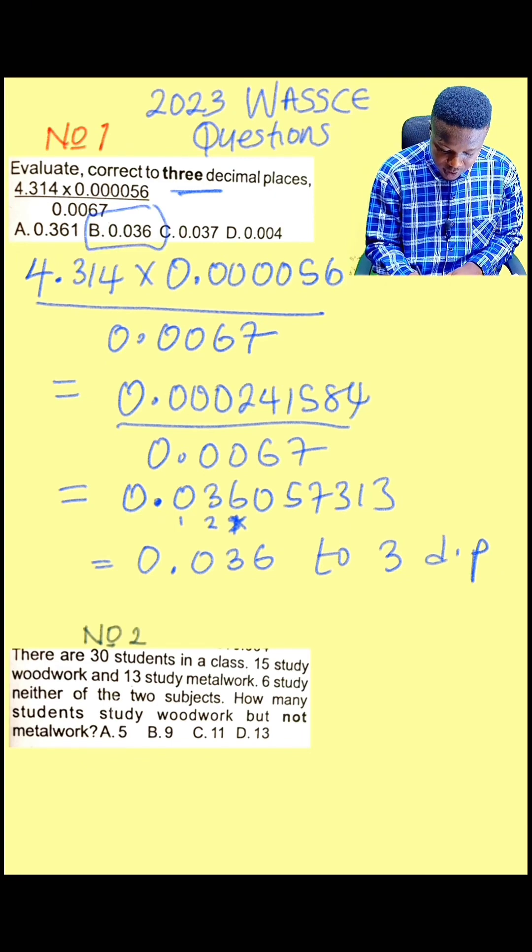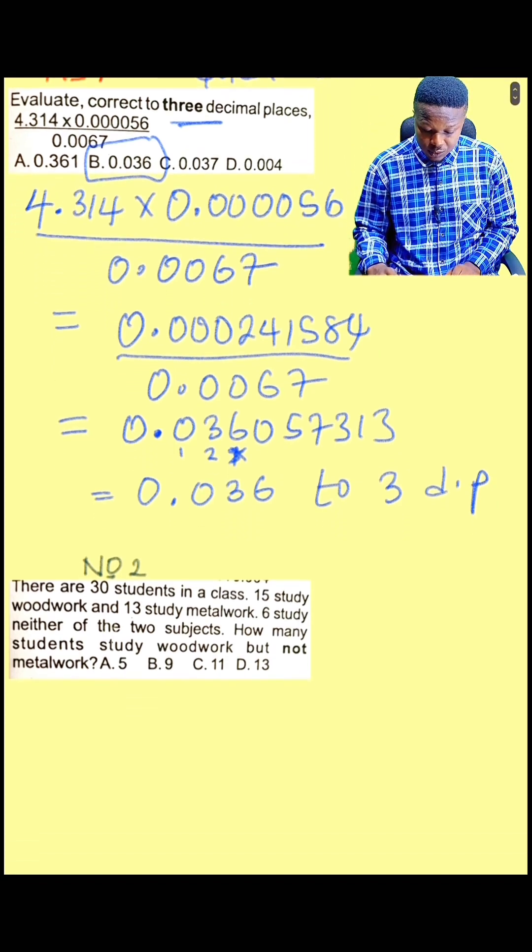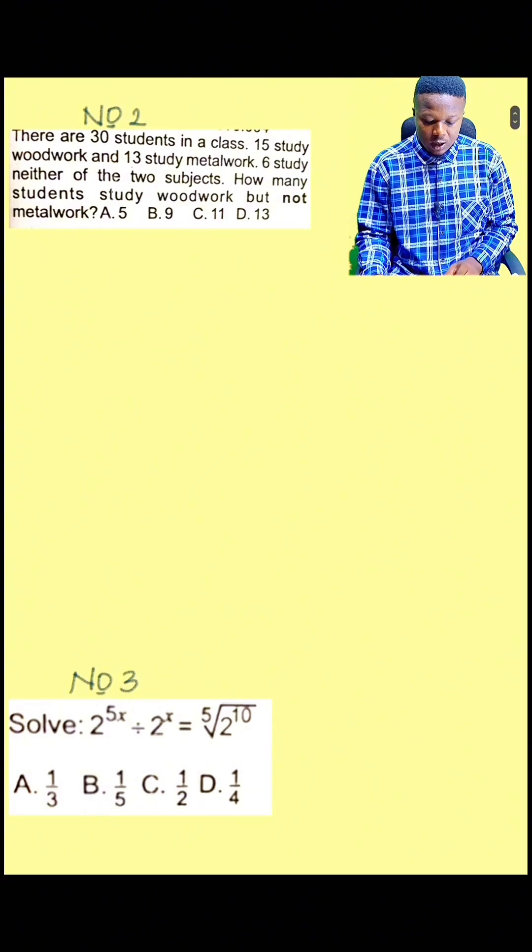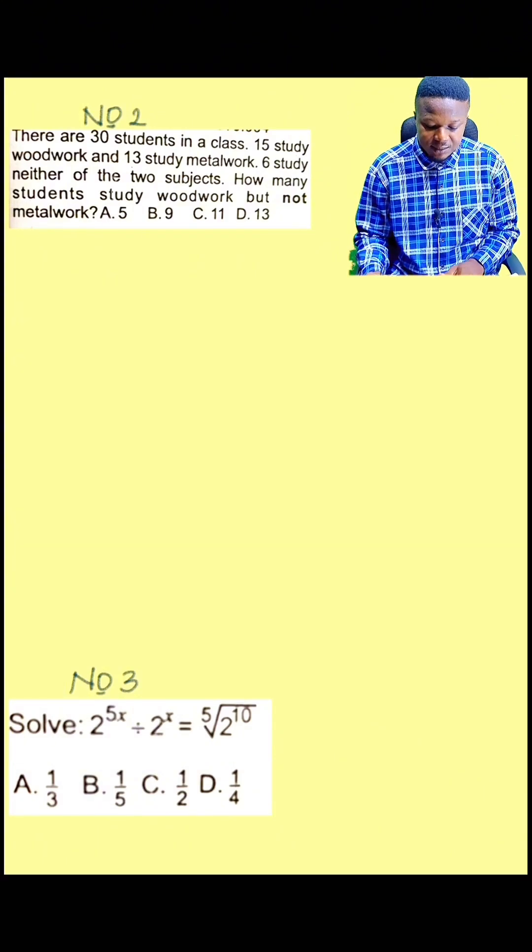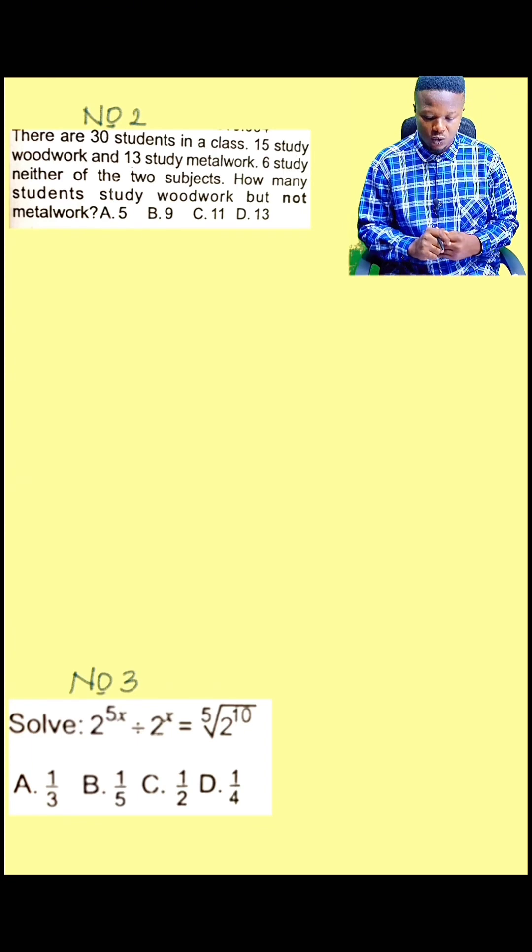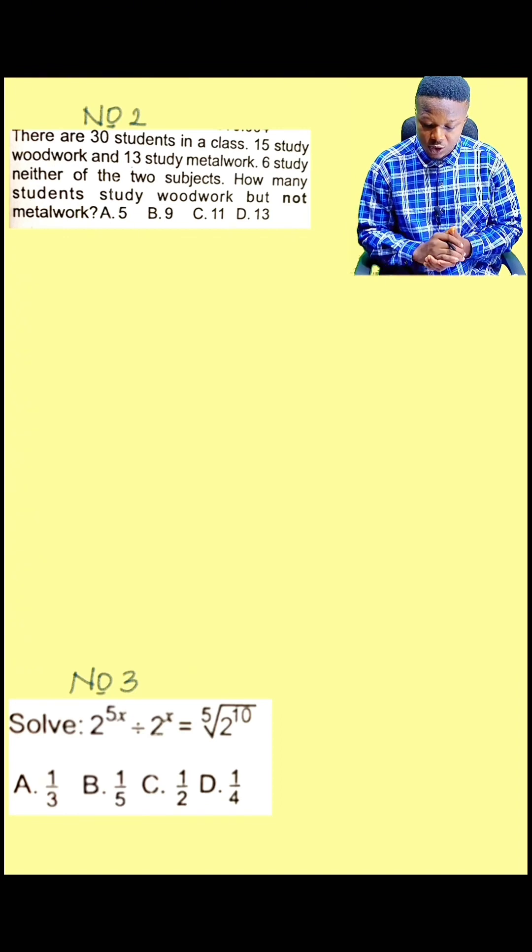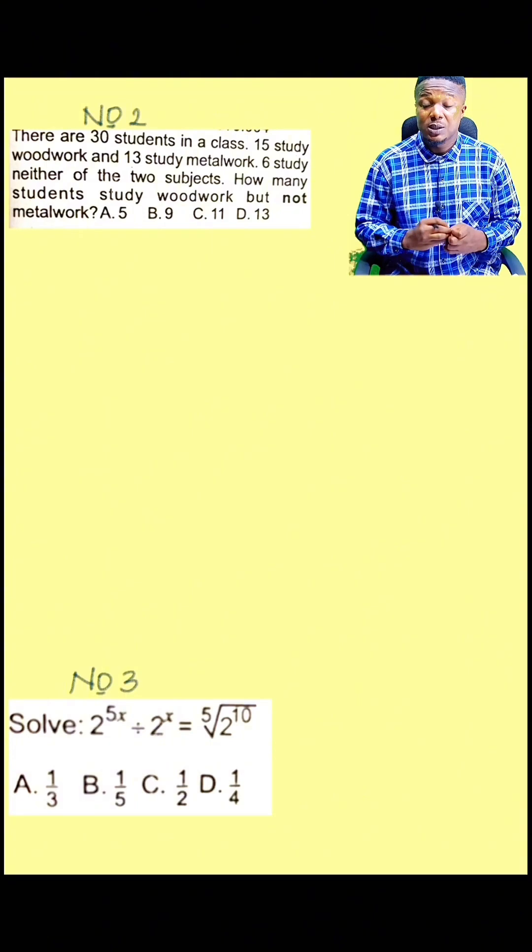So option B is the correct answer to number one. So we go for number two. Number two says that there are 30 students in a class, and 15 study woodwork while 13 study metal work. Six study neither of the two subjects. How many students study woodwork but not metal work?